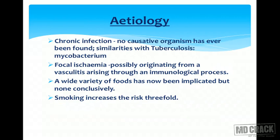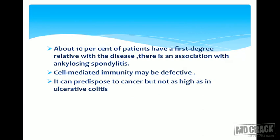Etiology: It is caused by chronic infection but no causative organism has ever been found. There is similarity with tuberculosis as mycobacterium species was seen. Another causative factor can be focal ischemia, possibly originating from a vasculitis arising through an immunological process. A wide variety of foods have been implicated but none conclusively proven to cause Crohn's. Smoking increases the risk three-fold. About 10% of patients have a first degree relative with the disease, and there is an association with ankylosing spondylitis. Cell-mediated immunity may be defective, and it can predispose to cancer, but not as high a risk as in ulcerative colitis.